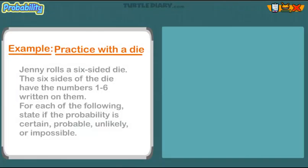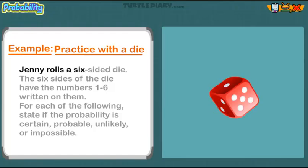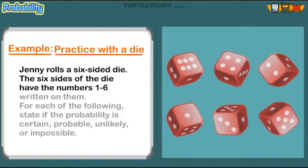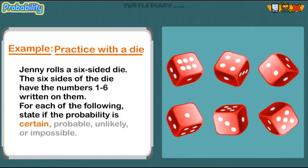Example practice with a die. Jenny rolls a six-sided die. The six sides of the die have the numbers 1 through 6 written on them. For each of the following, state if the probability is CERTAIN, PROBABLE, UNLIKELY, or IMPOSSIBLE.